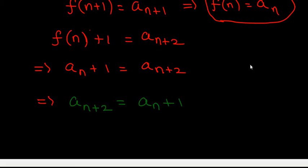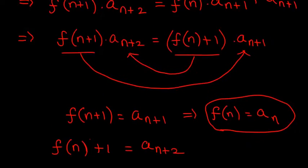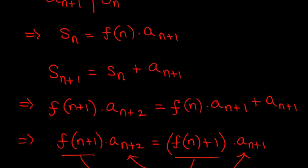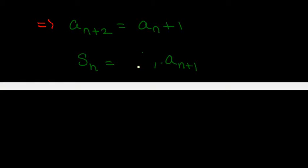So we have the recurrence a_{n+2} equals a_{n+1}. Remember f(n) equals a_n, and S_n equals f(n) times a_{n+1}, so S_n equals a_n times a_{n+1}. Now let us verify this by induction. For now, let us not worry about the base cases — let us try the induction step to check whether this can work.